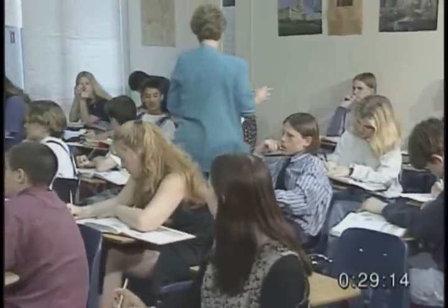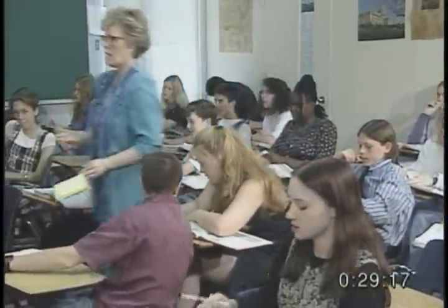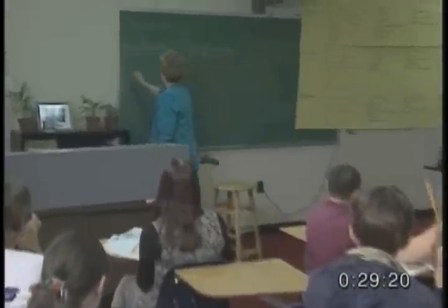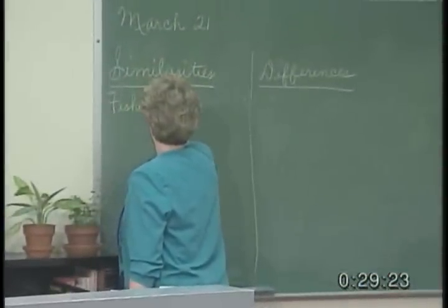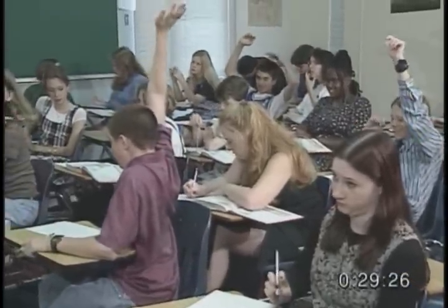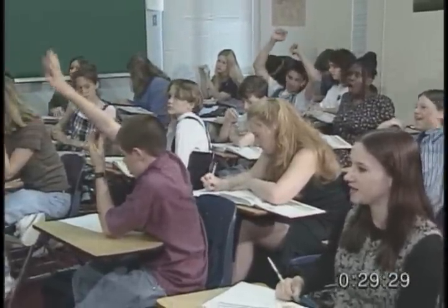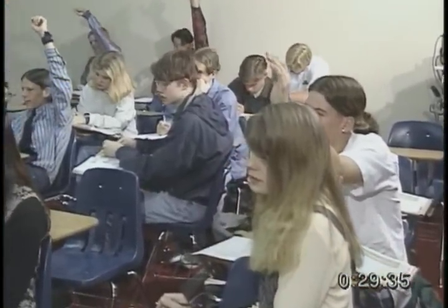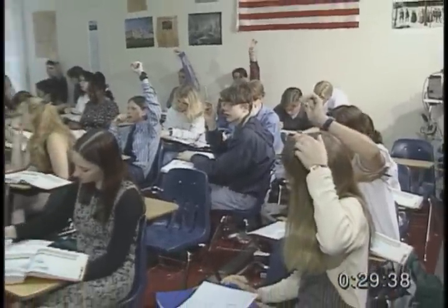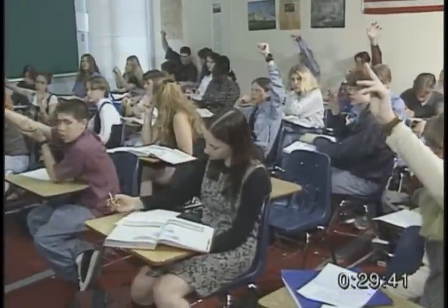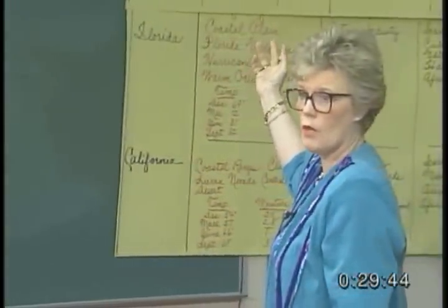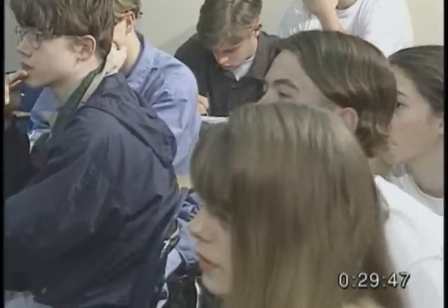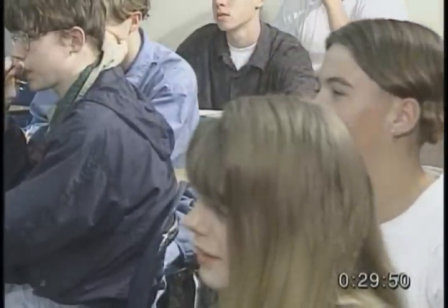At the end of their allotted time, Judy calls the class back together. Carnicia says: "All are involved in fishing." Judy affirms they all have fishing. John then says: "They all have forestry." Judy asks for a difference. Shane mentions fruit between Florida and California. Judy confirms: "Florida and California have fruit."